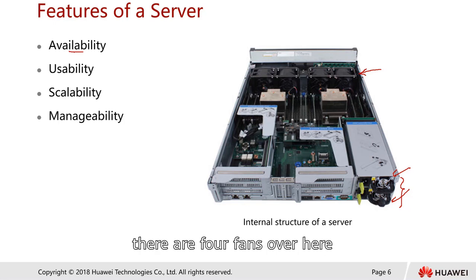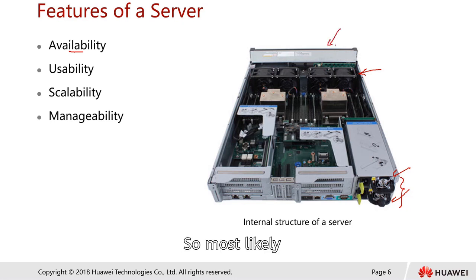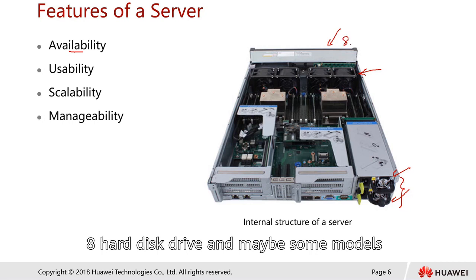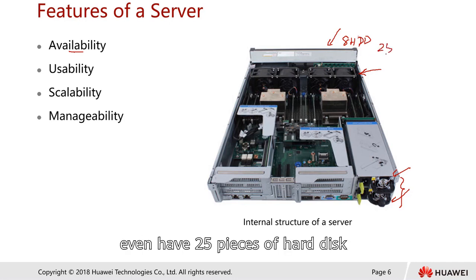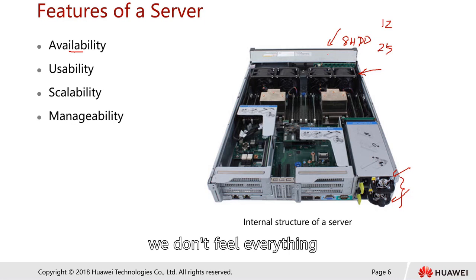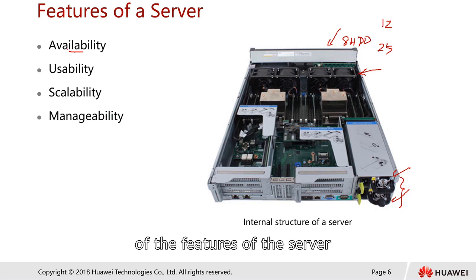Servers also have other redundant components such as fans. In this example we have four fans, and at the front we have the hard drives. Some models have 8 hard drives, some models have 25 or 12 hard disks. All these hard disks can be configured for RAID 5 or RAID 6, so if one hard disk fails, you don't lose everything — that's a kind of redundancy.